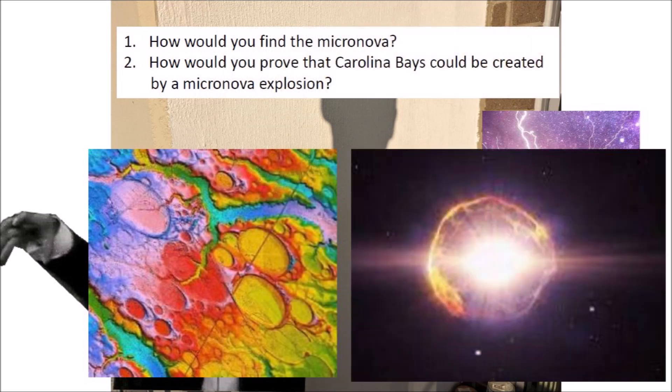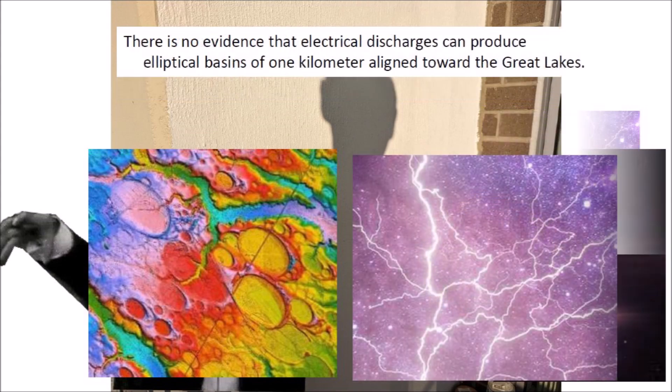Suppose that we wanted to test the hypothesis that a Micronova explosion created the Carolina Bays. How would we find the Micronova? How would we prove that the Carolina Bays could be created by a Micronova explosion? This is an untestable hypothesis. Suppose that we wanted to test the hypothesis that electric discharges created the Carolina Bays. There is no evidence that electrical discharges can produce elliptical basins of one kilometer aligned toward the Great Lakes. Electrical discharges have not been shown to create elliptical craters at all. Such assertions cannot be tested. If a hypothesis cannot be tested, it is not a scientific hypothesis.